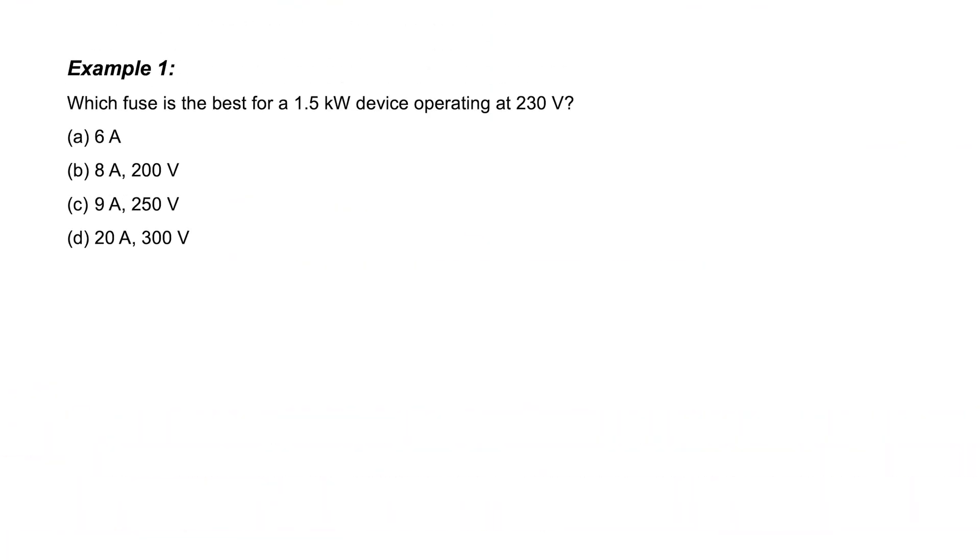Example one, which fuse is the best for a 1.5 kilowatt device operating at 230 volts? Well, if I take 1500 watts and divide it by 230 volts, I'm going to get 6.52 amperes. A is wrong, but how about B, C, and D? If our device is only going to use 6.52 amperes, can I pick B? Well, no,